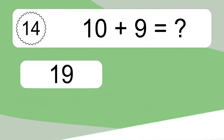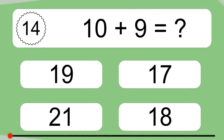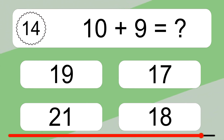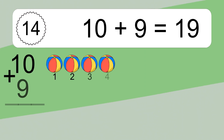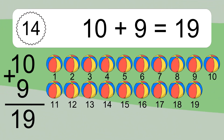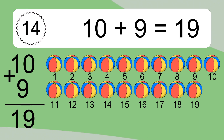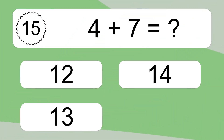10 plus 9 equals what? 10 plus 9 equals 19. Let's count it: 1, 2, 3, 4, 5, 6, 7, 8, 9, 10, 11, 12, 13, 14, 15, 16, 17, 18, 19.